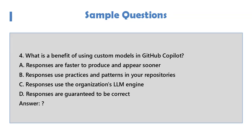Question 4: What is a benefit of using custom models in GitHub Copilot? A. Responses are faster to produce and appear sooner. B. Responses use practices and patterns in your repositories. C. Responses use the organization's LLM engine. D. Responses are guaranteed to be correct.